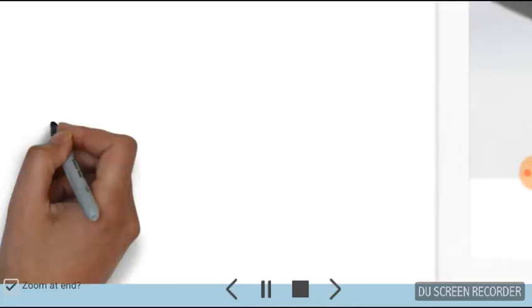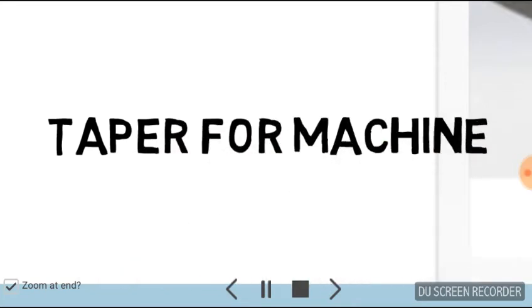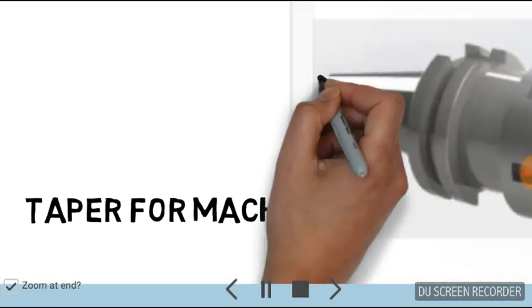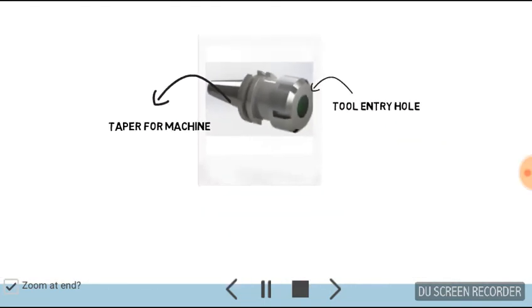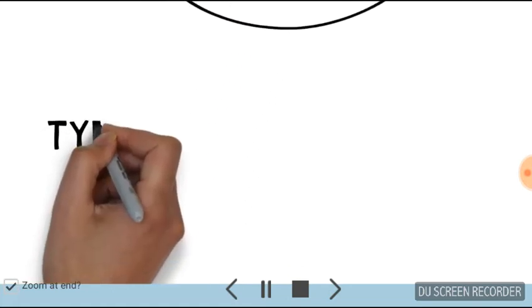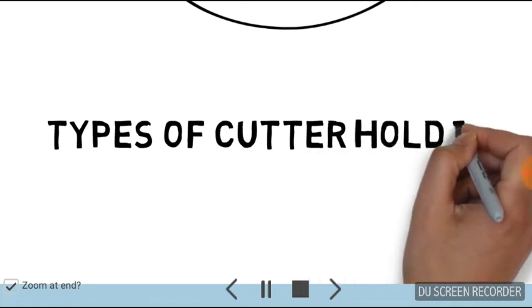This is the tool entry hole, and this taper is the taper for the machine. These are all the basics of the tool holder. Now we will discuss